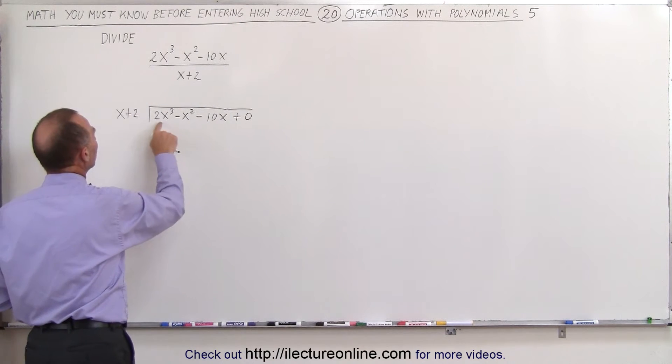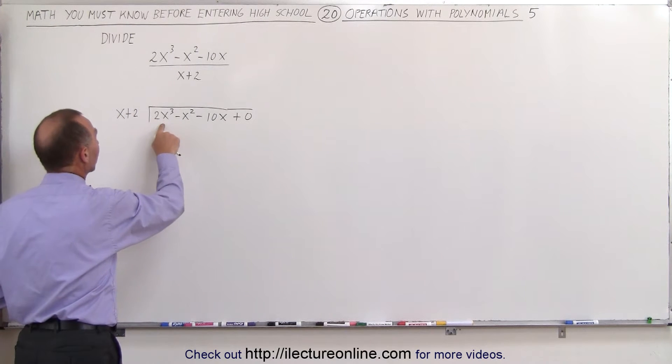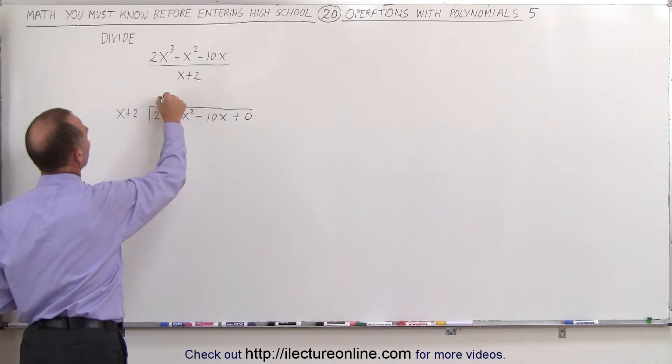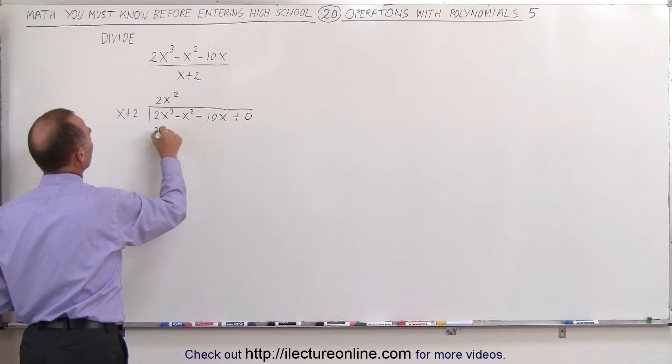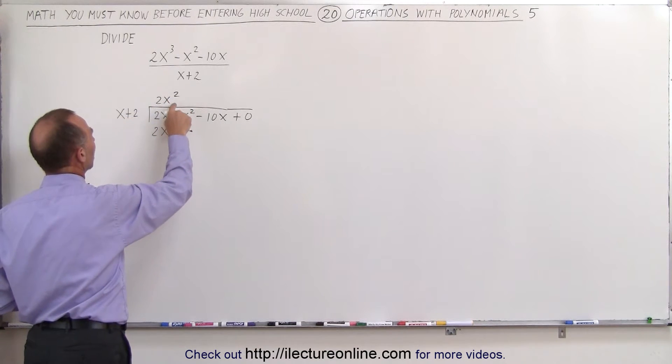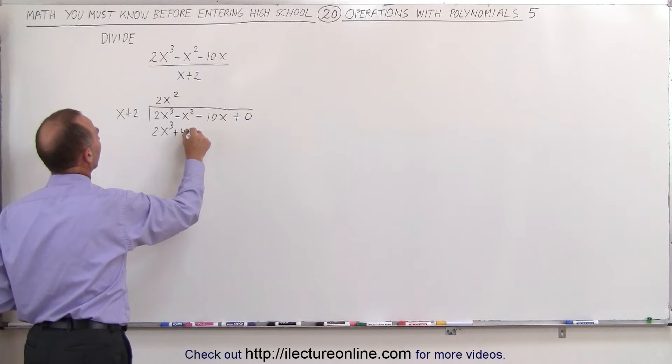So x goes into 2x³ how many times? In other words, what number must we multiply times x to get 2x³? And the answer is 2x² because 2x² times x gives us 2x³, and we also must multiply the 2x² times 2 to give us plus 4x².